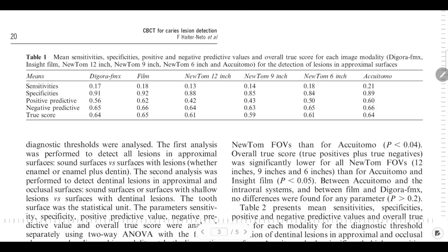For interproximal caries, the sensitivity for conventional and semi-digital film was 0.17 and 0.18. Sensitivity decreased with large and medium field of view, then increased with small field of view for NewTOM 3G and Morita, becoming more sensitive than conventional film. For specificity, values were 0.91 and 0.92, decreasing as field of view became more limited, with Morita at 0.89.